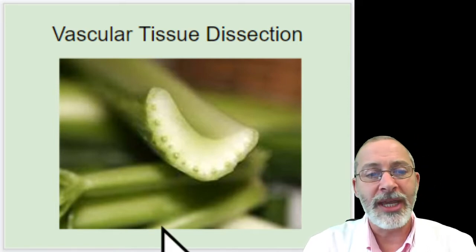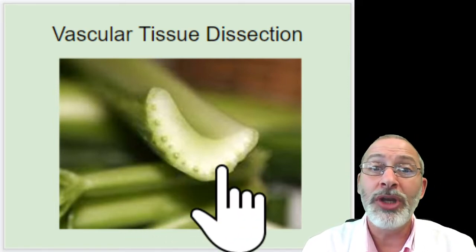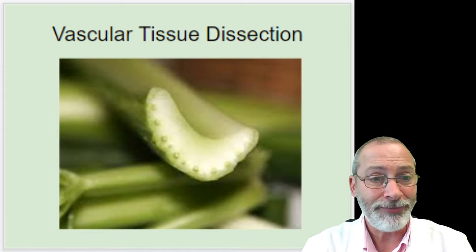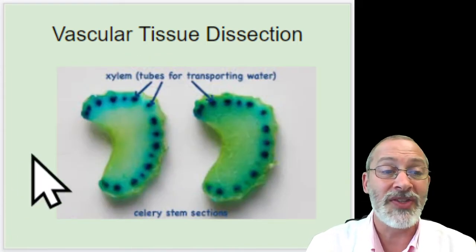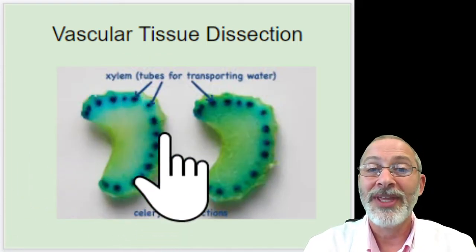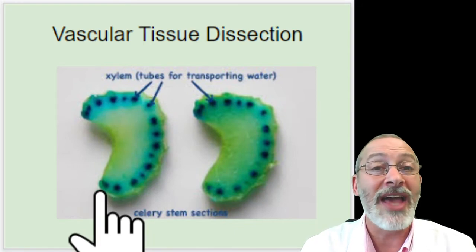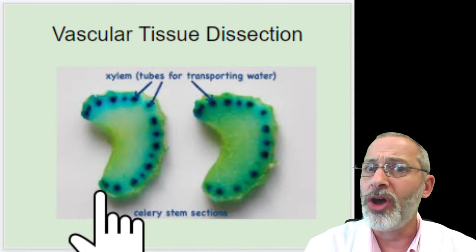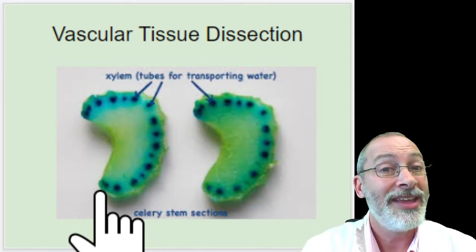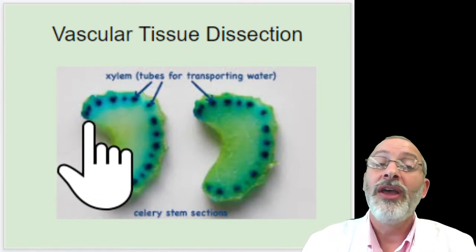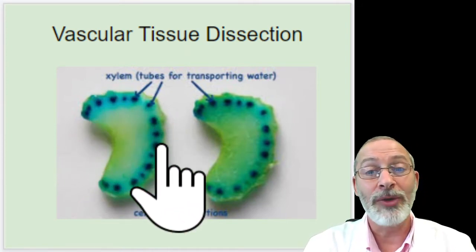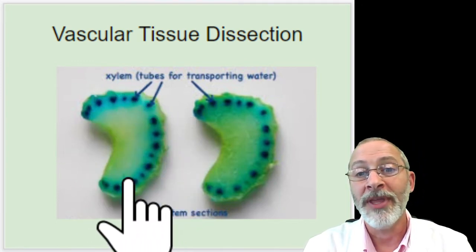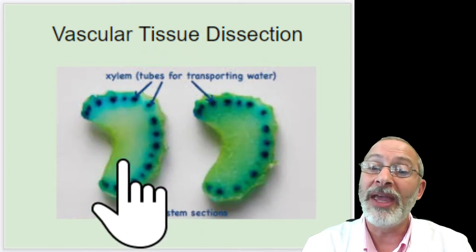Now imagine taking this celery stalk and putting it into a container of water that has been dyed with food coloring. The next day you might come back and see it looks like this, because that vascular tissue that transports water — which is called xylem — is allowing that dyed water to flow through it. The tiny tubes for transporting water will stain a different color.